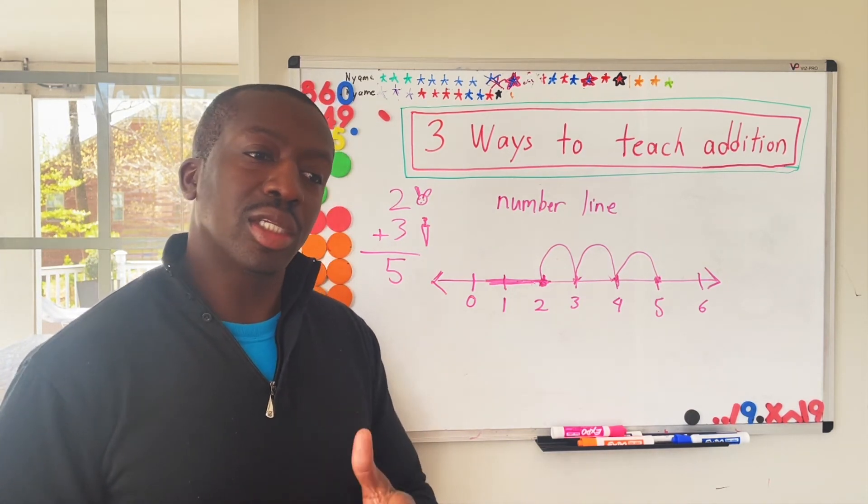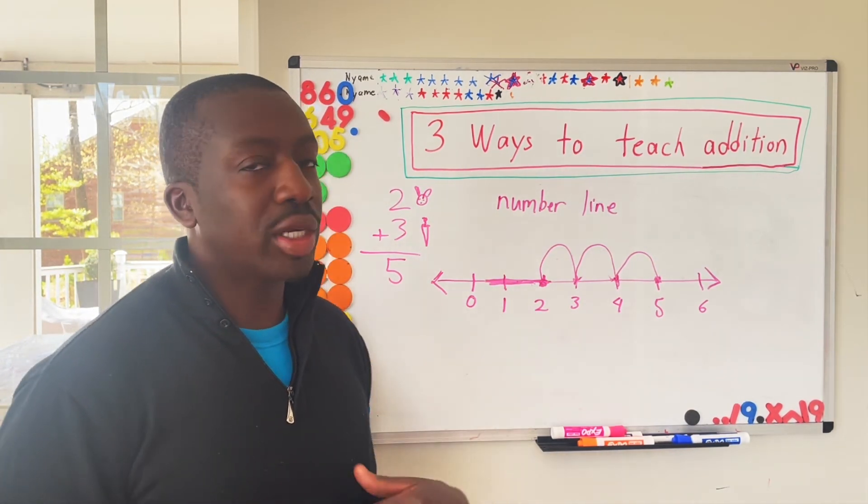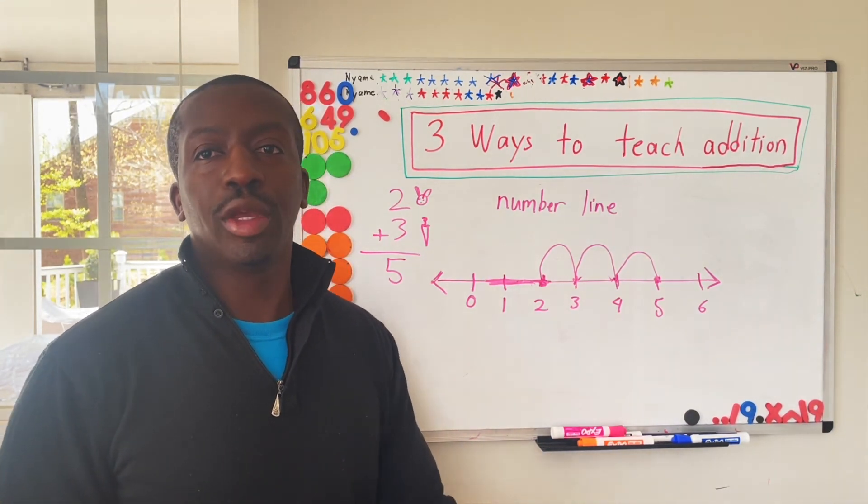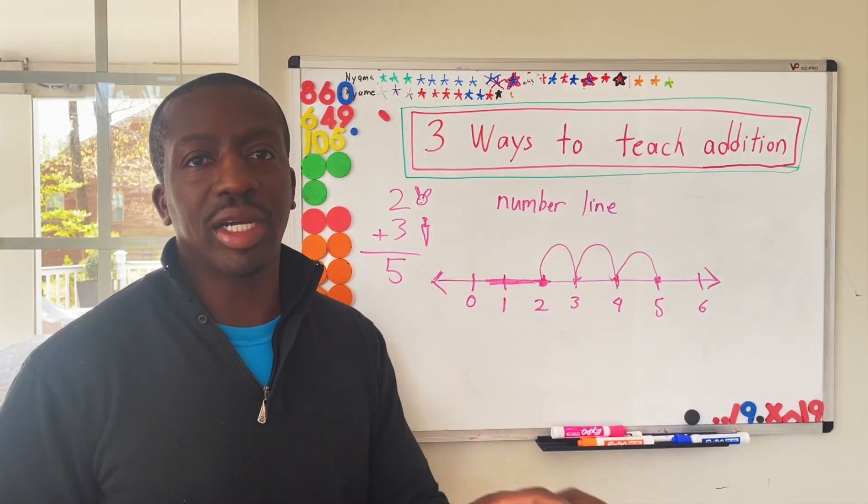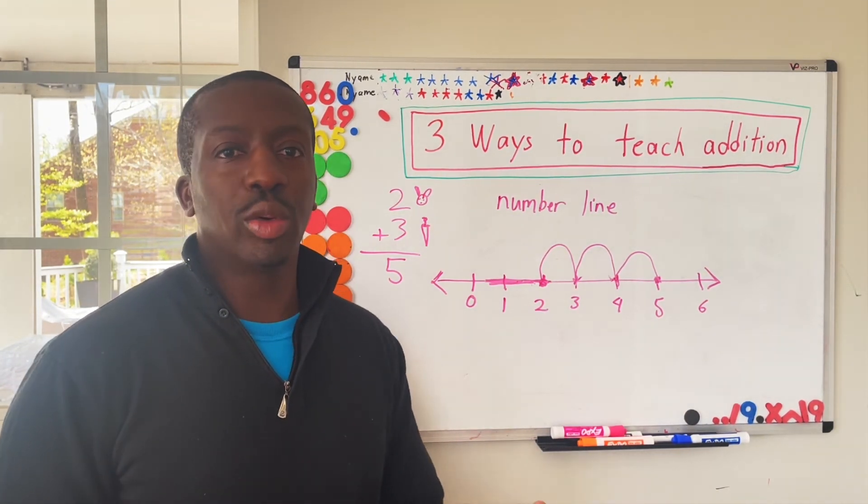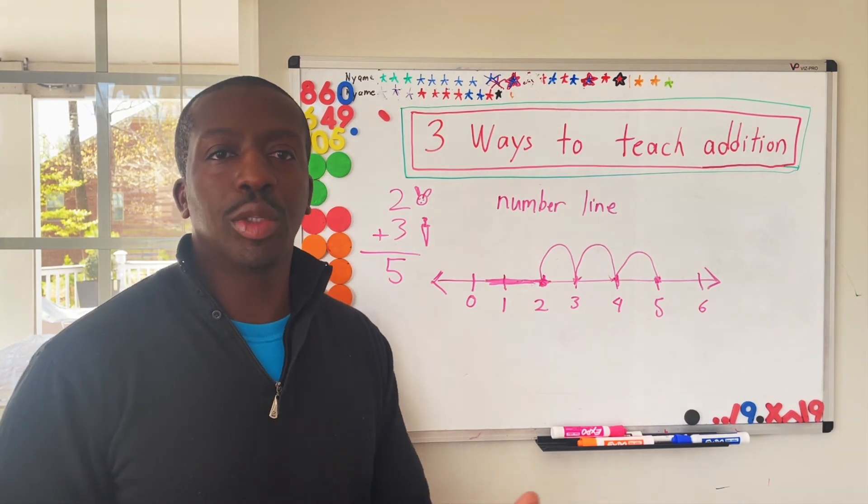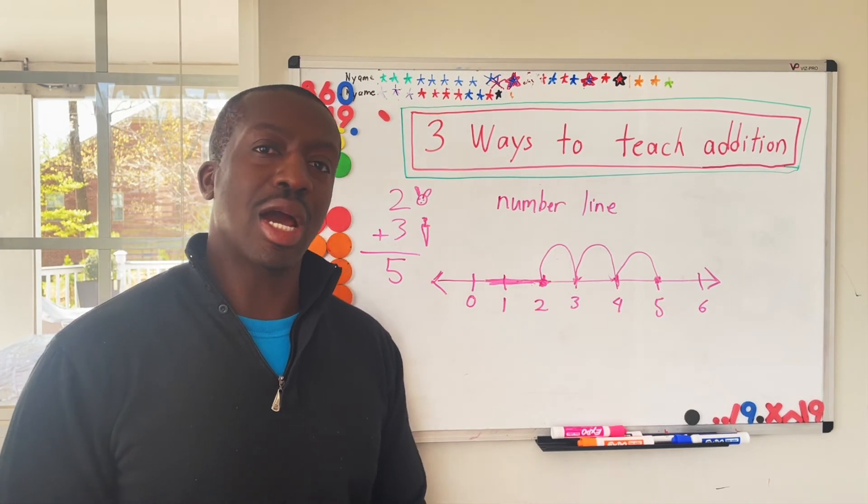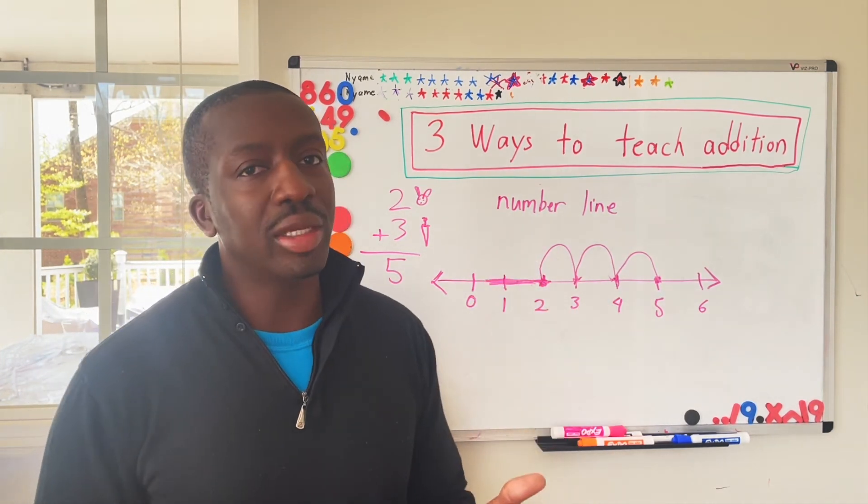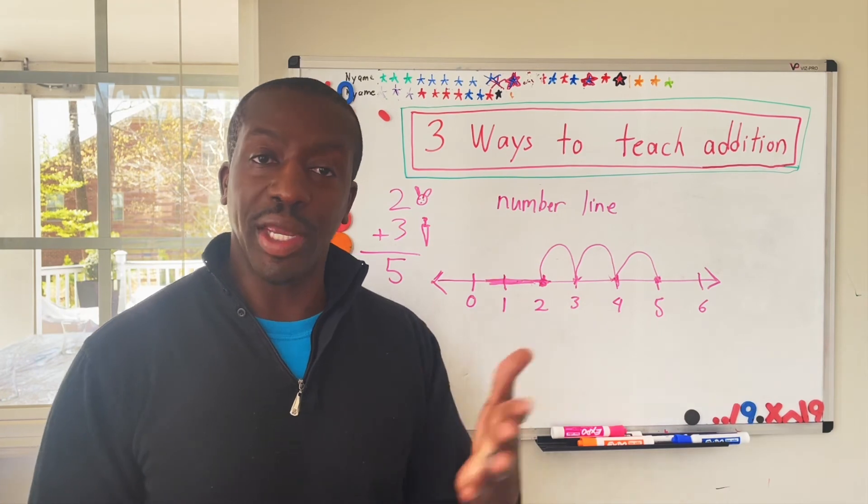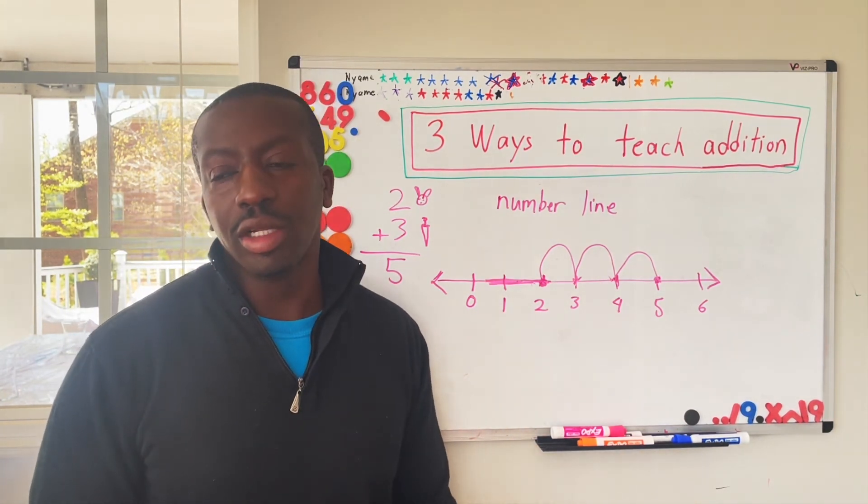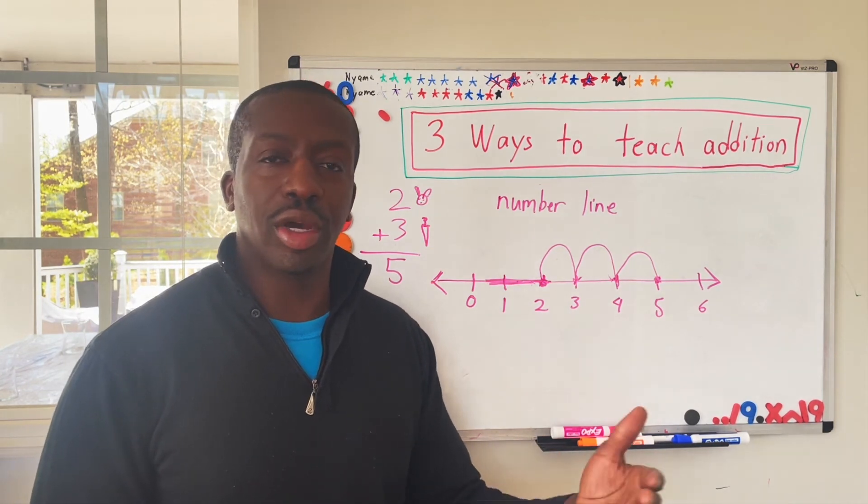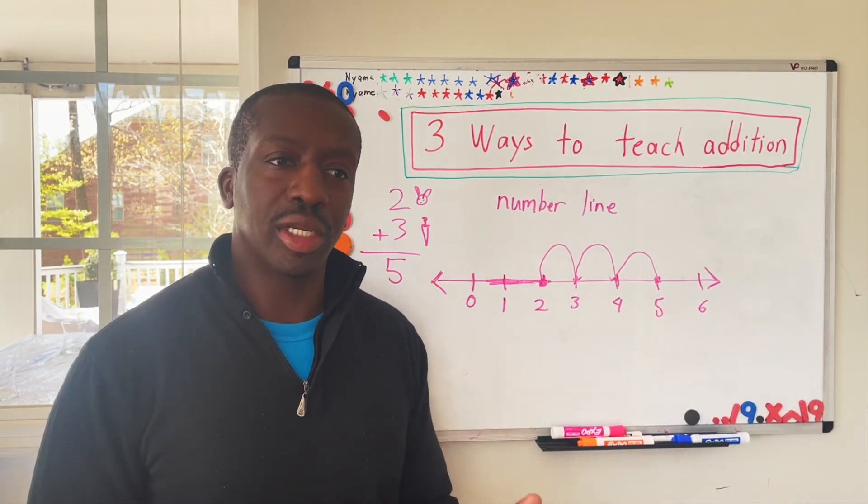And then if they consistently are not getting the methods being taught at school, you may want to have the conversation with your teacher and say, this is a method we've tried at home, whether it's a number correspondence method or the number bonds method, would you be okay with him experimenting with one of these methods in the classroom? That way he feels confident. Ultimately, when a child is confident enough in this learning, they'll be able to do all three methods. But for starters, I would say, pick one, pick one that works well with your child. If your child is getting it, then you can essentially move on to another method to strengthen their understanding of addition.